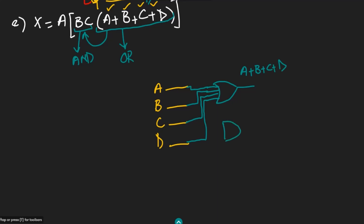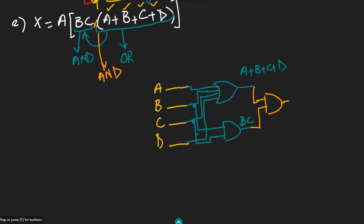b·c uses an AND gate with 2 inputs: b and c are the two inputs taken from the input lines, and I will have here b·c as the output. Now I use a 2-input AND gate to combine these: the first input is b·c, the second input is a plus b plus c plus d, and the output of it will be b·c·(a plus b plus c plus d).